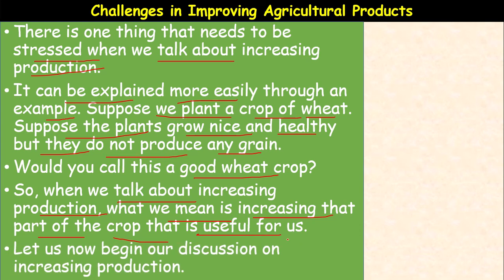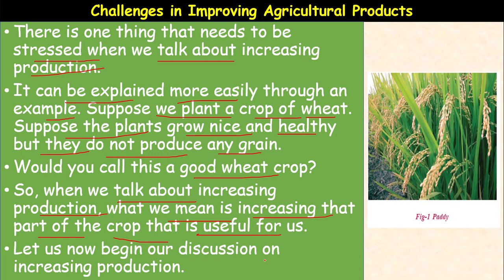When we talk about increasing production, what we mean is increasing that part of the crop that is useful for us — the grain production. For example, you can see this figure of paddy. It is a good crop because it is showing good grains. Let us begin our discussion on increasing production.